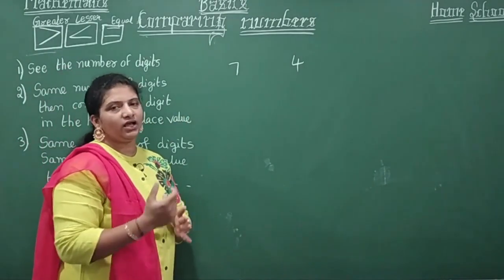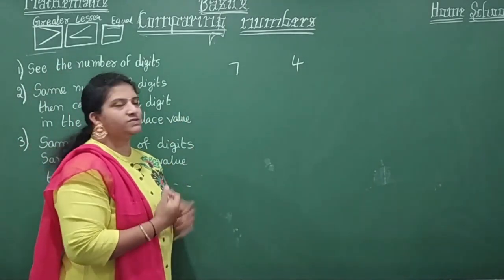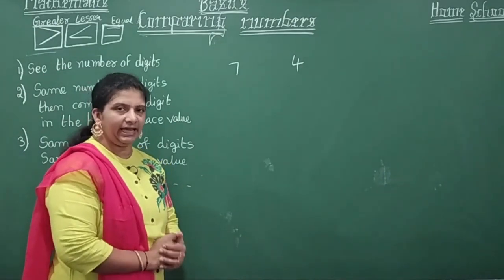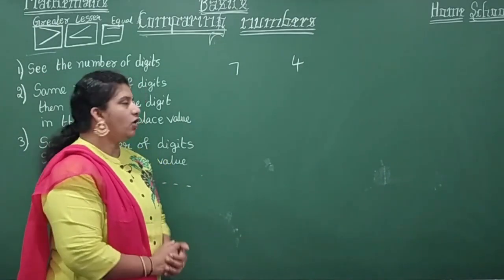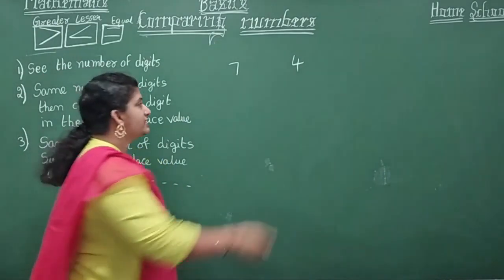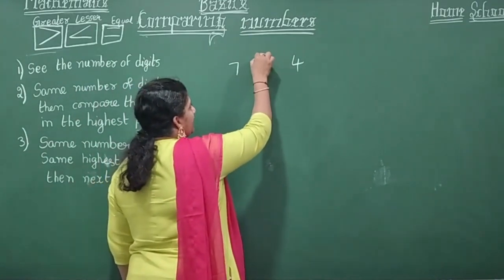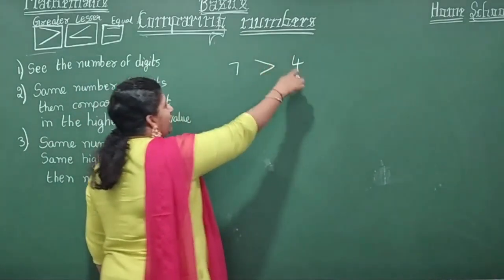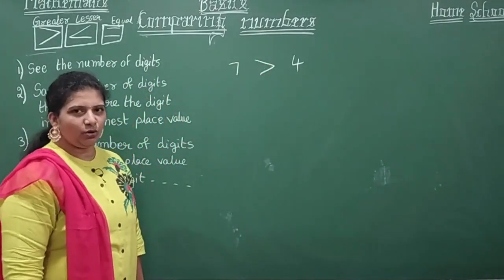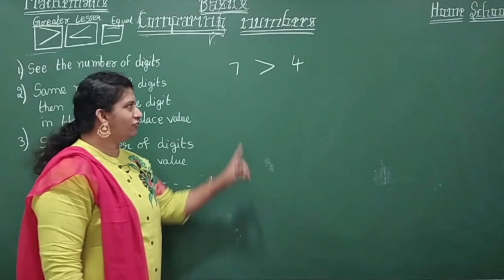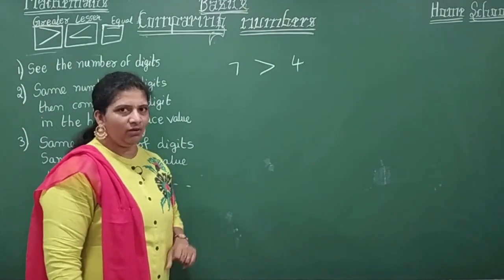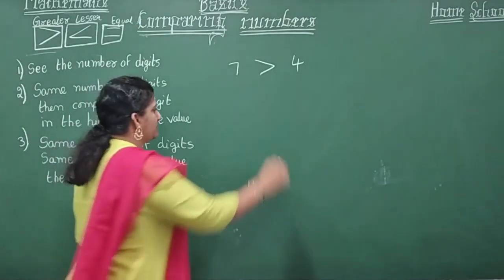If I ask you which is more, seven or four — seven is more, you will say directly. So how do you write it? Seven is greater than four. Are you following? Good. Now let me ask you one more in the same manner.